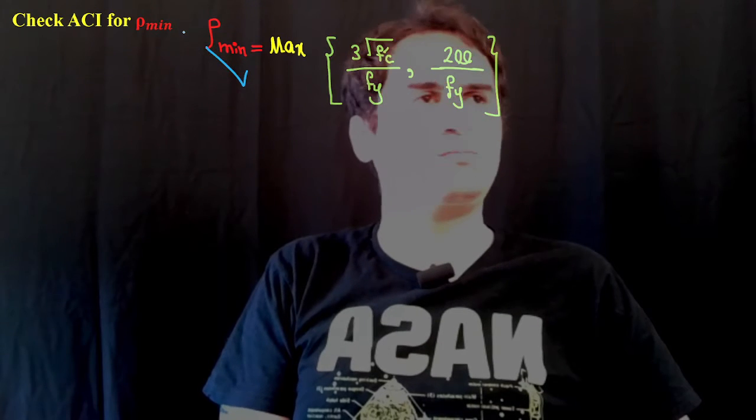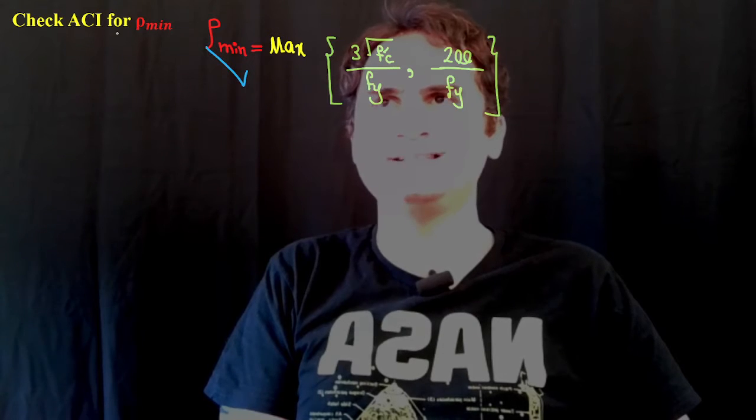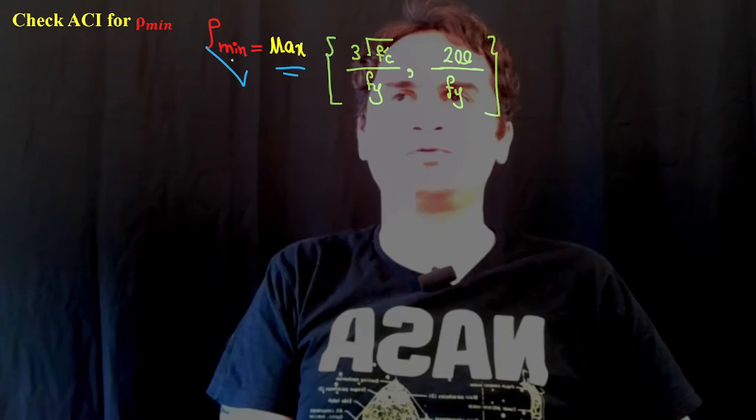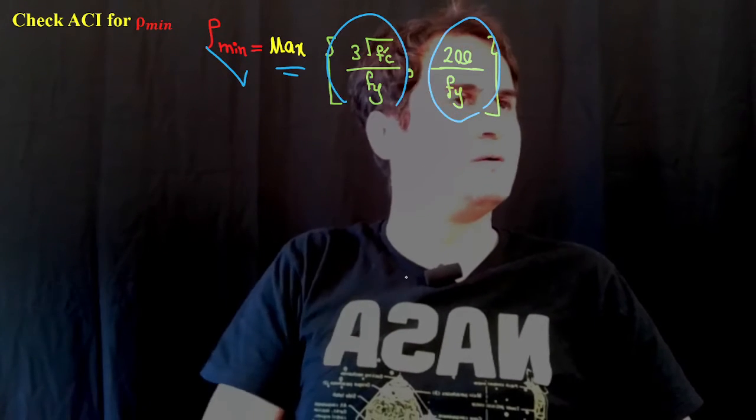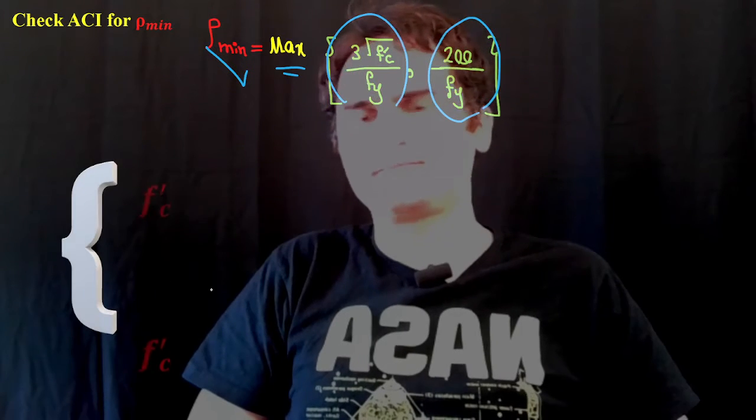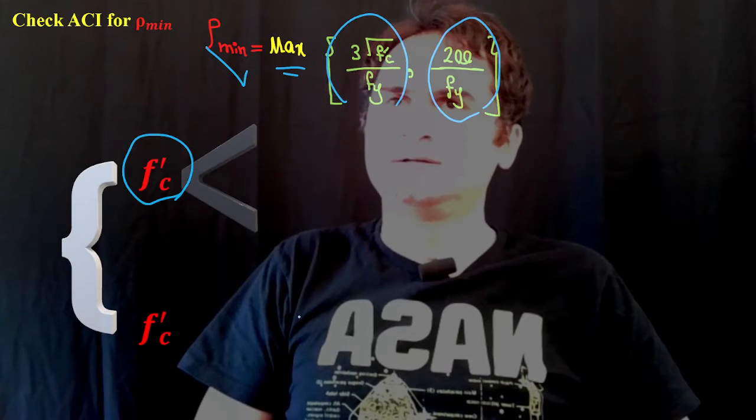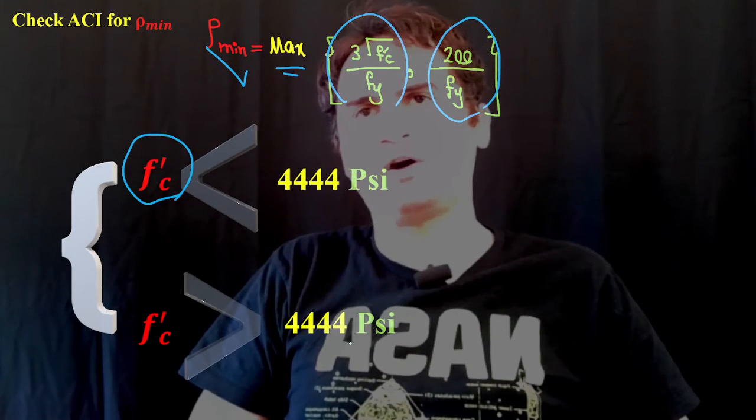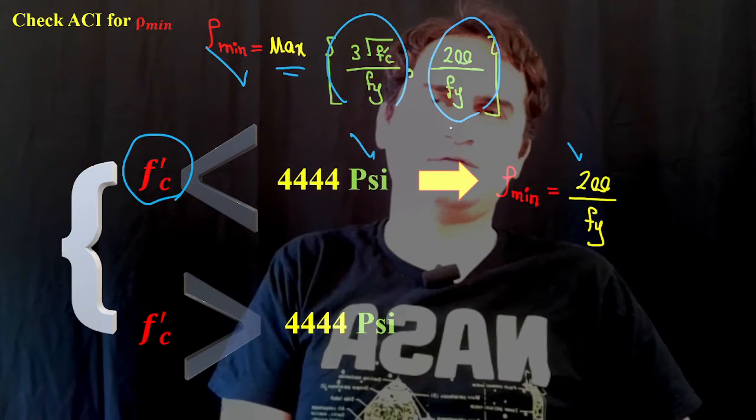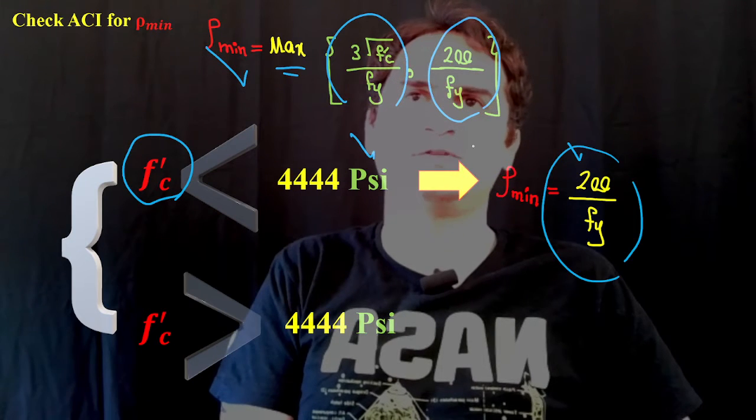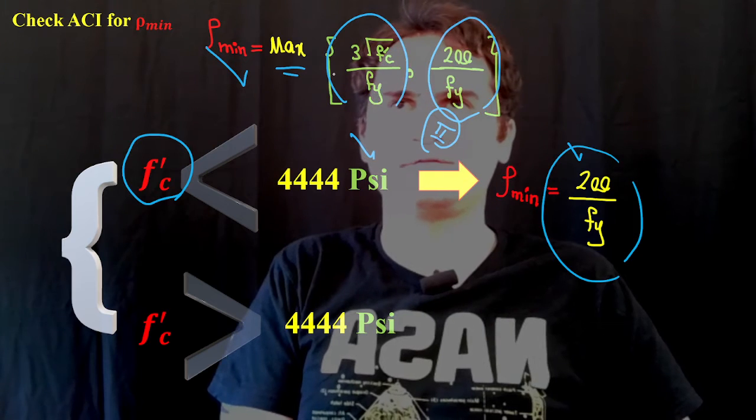Rho minimum, the minimum density for steel based on ACI (American Concrete Institute), is the maximum of these two parameters. It says if f'_c is less than 4,444 psi, we go with 200 over f_y, that's the controlling term, the second part of this equation controls.